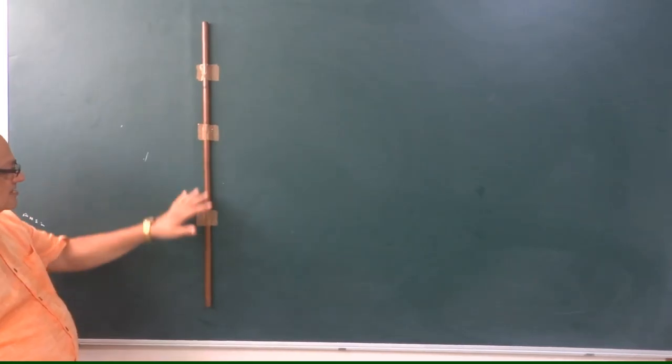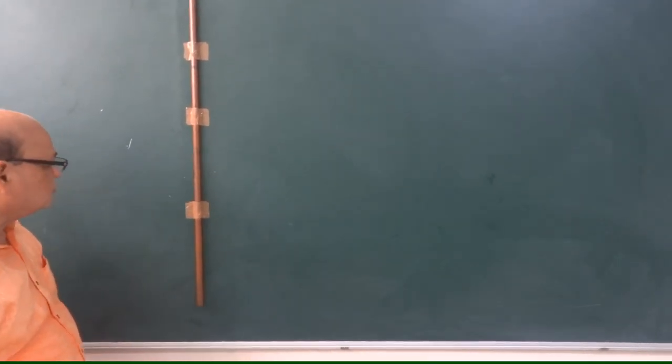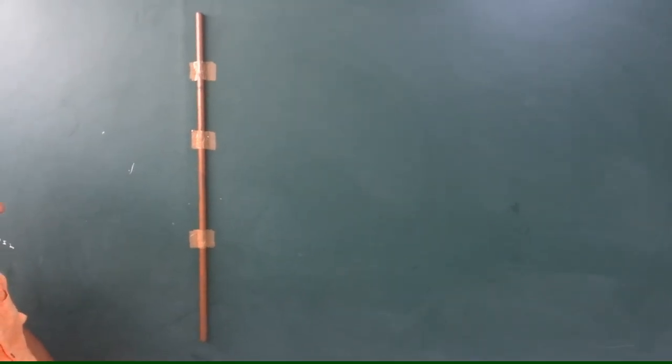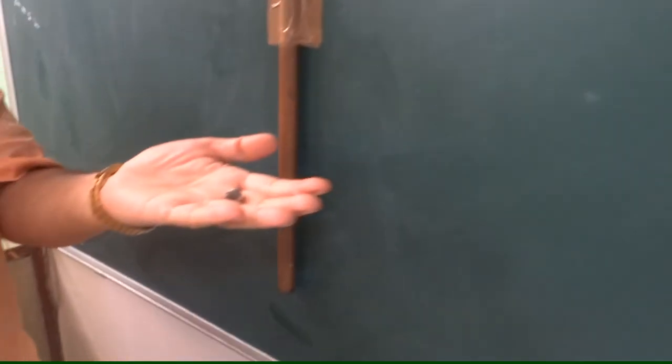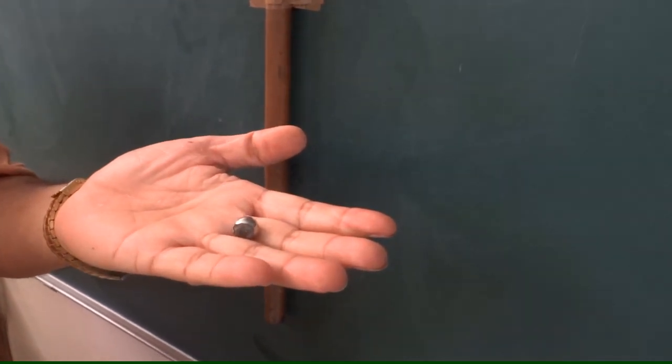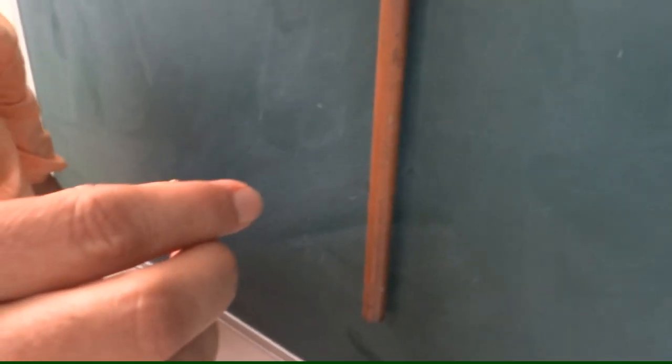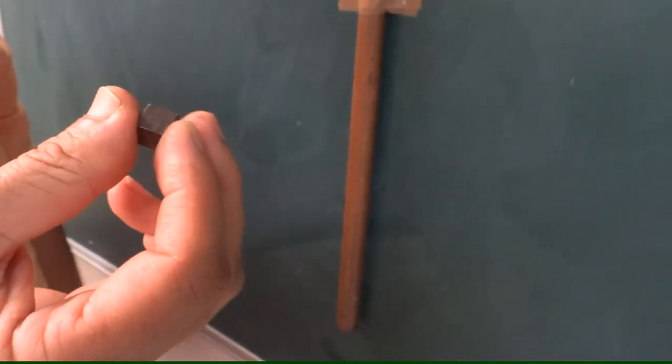This is a simple experiment to show you about eddy currents. What is here? This is a copper tunnel which is hollow inside. I have two objects with me. One is a magnet, a spherical magnet. This is a normal copper cube which has no magnet.